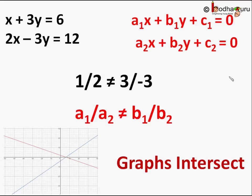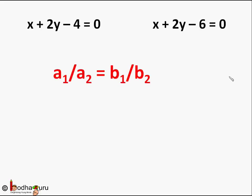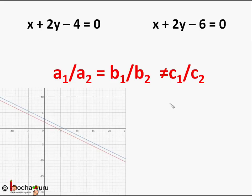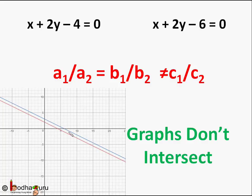Now we take the case of parallel linear graphs drawn in this video. The equations were x + 2y - 4 = 0 and x + 2y - 6 = 0. Here a1/a2 = 1/1 = 1 and b1/b2 = 2/2 = 1, which means a1/a2 = b1/b2. And c1/c2 = (-4)/(-6) = 2/3, which is not equal to a1/a2 or b1/b2. If this condition — a1/a2 = b1/b2 ≠ c1/c2 — is true for any pair of linear equations, then the graphs don't intersect. Graphs don't intersect means they are parallel, meaning the pair of linear equations doesn't have a common solution.